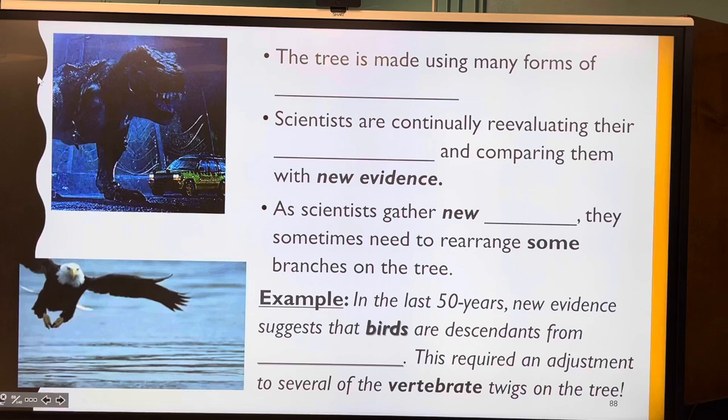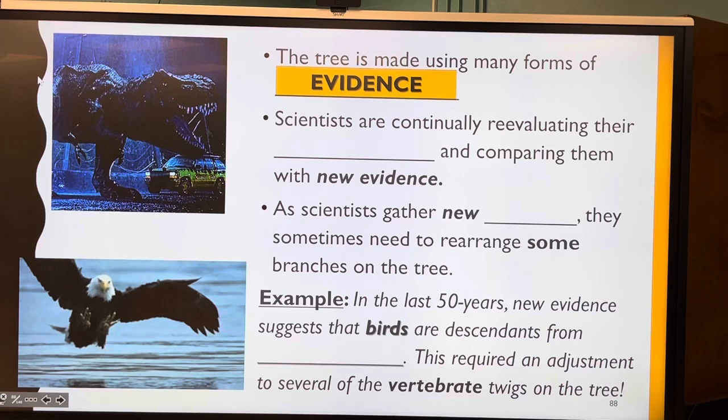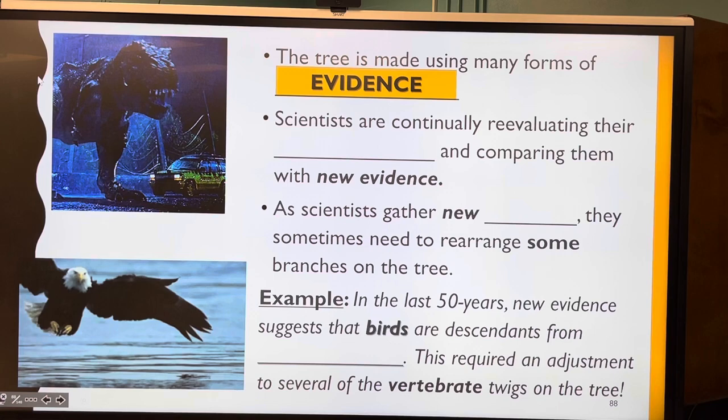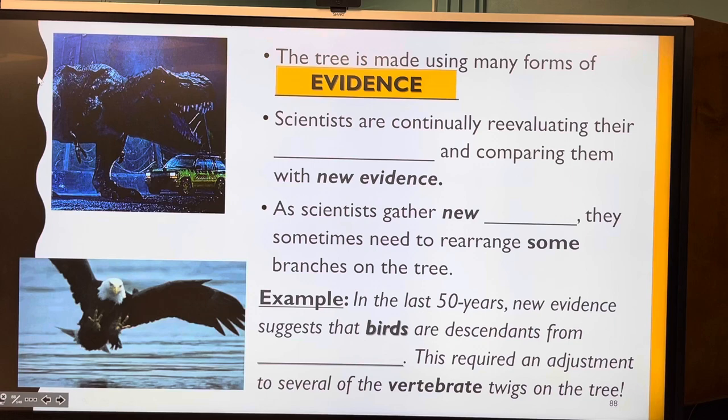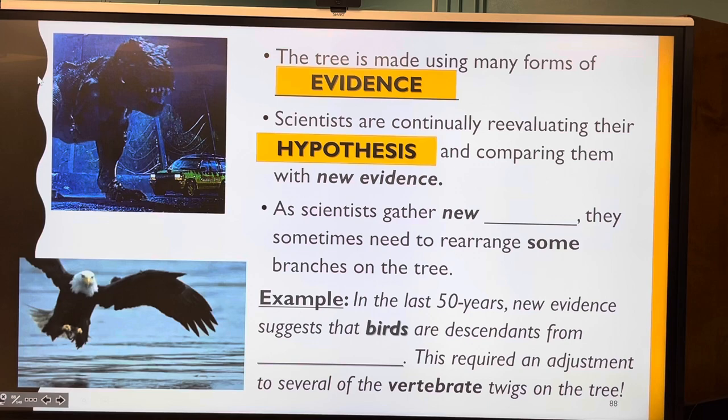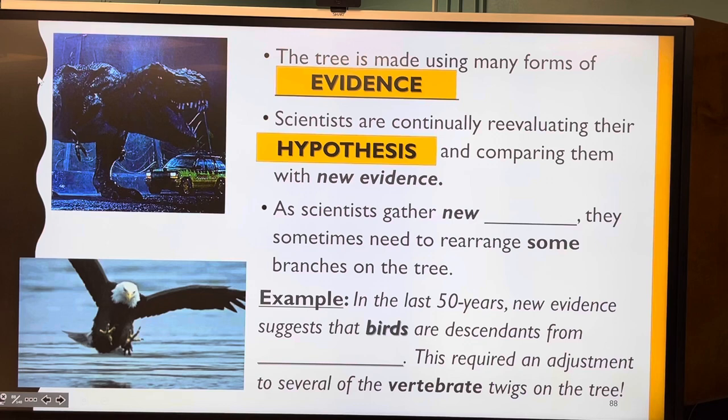The tree is made using many forms of evidence. None of this is just someone's belief or opinion — this is a theory, and remember, theories are based on facts and evidence. When new evidence comes in, the theory changes. Scientists are continually re-evaluating because of new evidence.